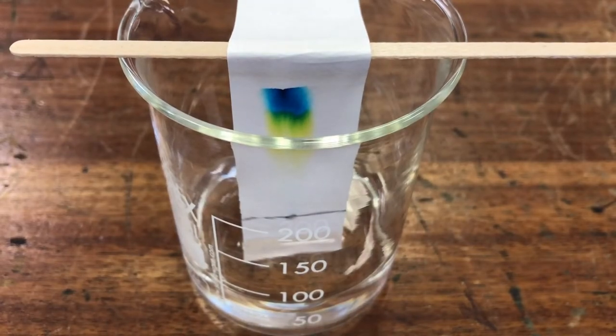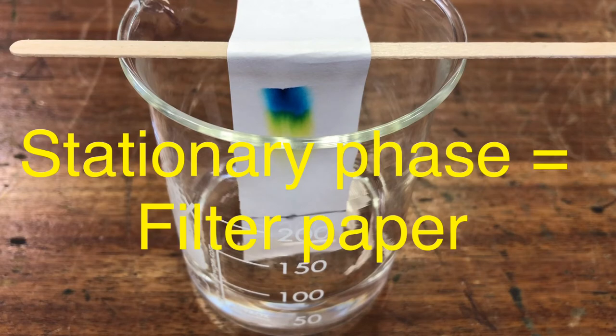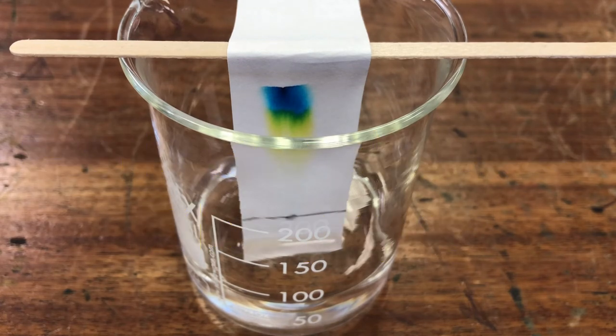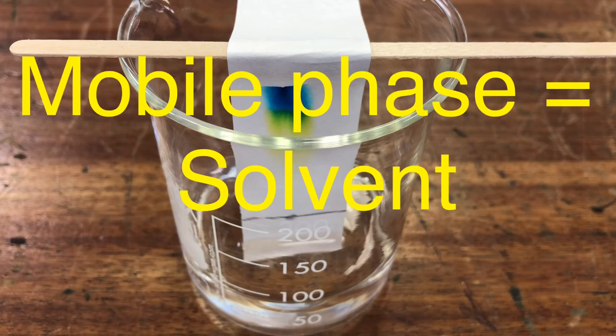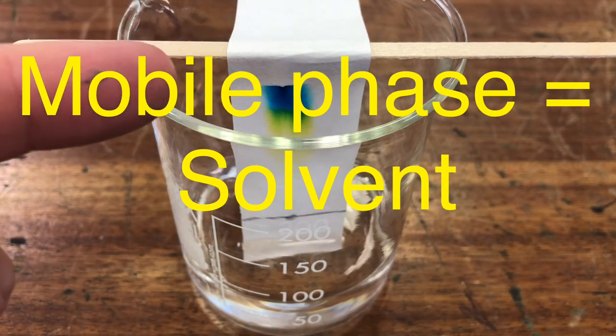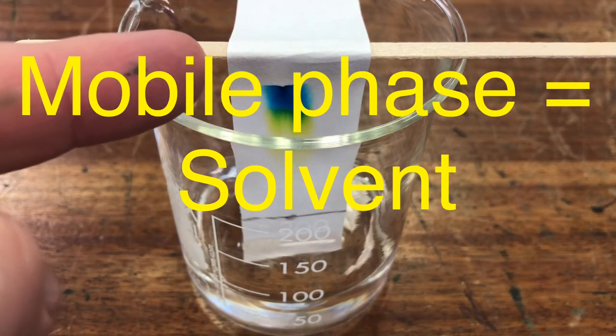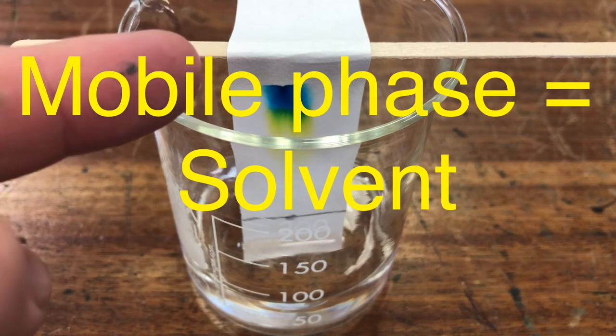There's a couple of key terms that you might come across in exam questions to do with chromatography, and I just want to introduce you to those two terms. And those two terms are mobile phase and stationary phase. So these are the two parts, the two phases of a chromatography experiment. Now, stationary means not moving, so the thing that doesn't move in my little chromatography setup here is the chromatography paper, the filter paper. So the filter paper is the stationary phase.